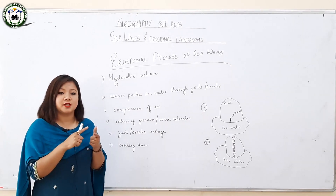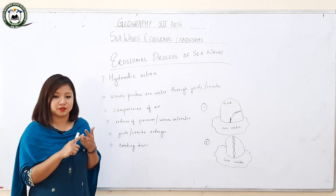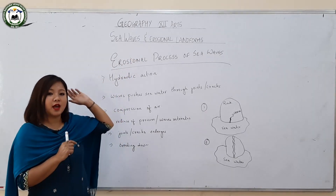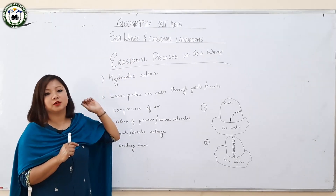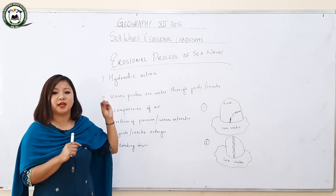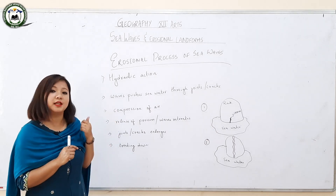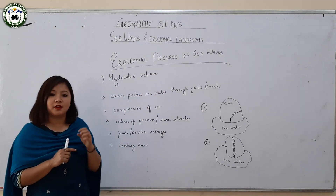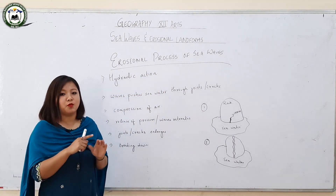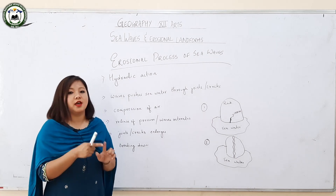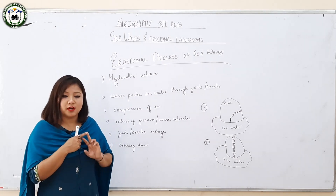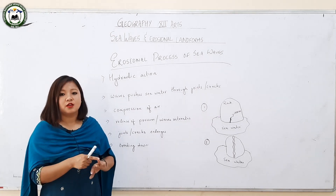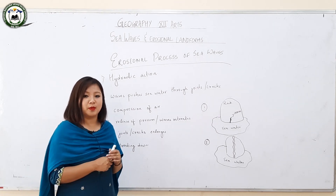The work of sea waves can be studied in terms of erosion, transportation, and deposition. Since this class focuses on sea waves and erosional landforms, we will focus on erosion processes and erosional landforms. There are four major erosional processes: hydraulic action, attrition, corrasion or abrasion, and solution or corrosion.